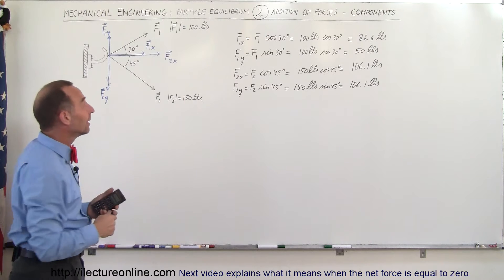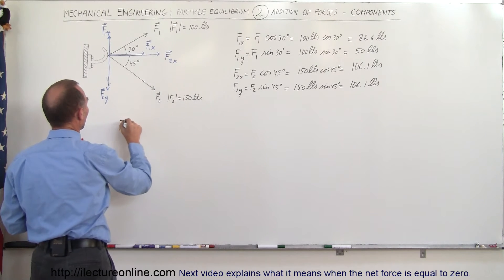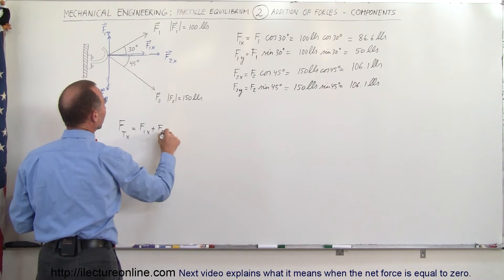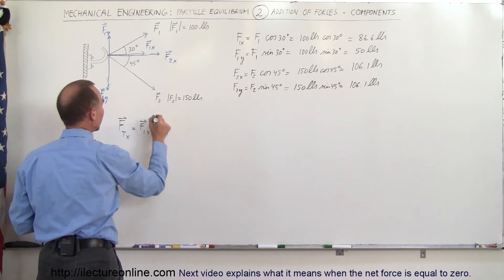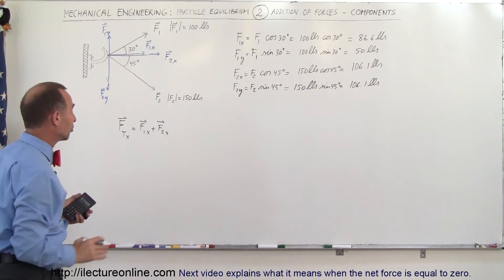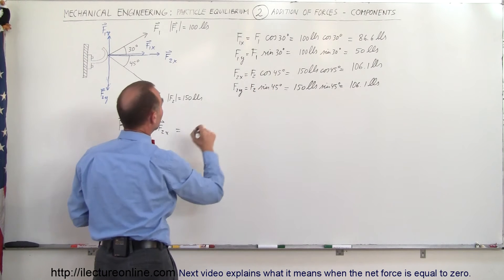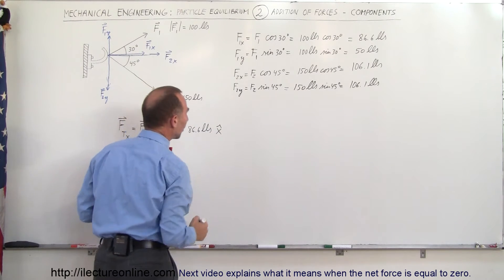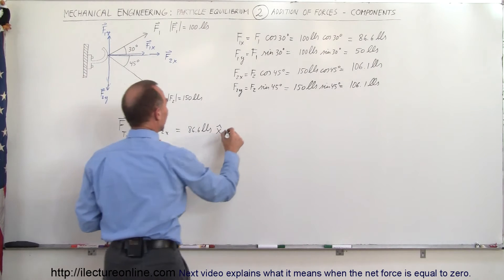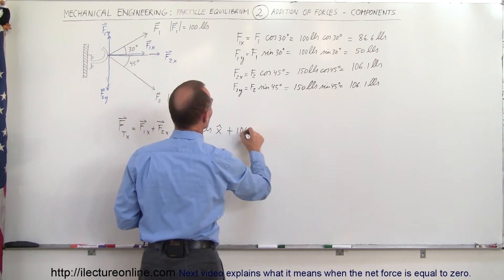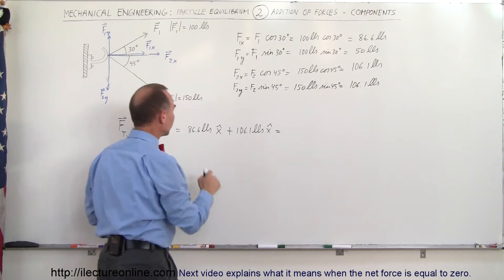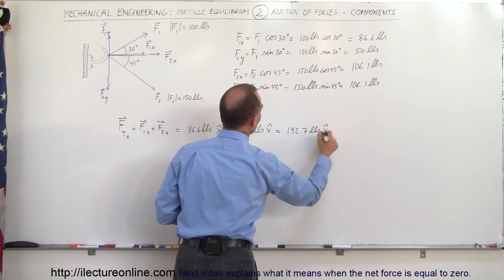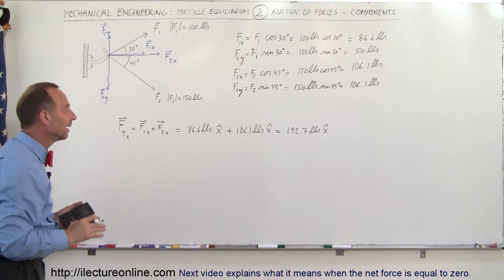Now we want to find the resultant in the X direction. F total in the X direction is equal to F1 in the X direction plus F2 in the X direction — and now we do have to worry about direction. So this is equal to 86.6 pounds in the X direction, plus 106.1 pounds in the X direction. When we add those two together we get 192.7 pounds in the X direction. This is how we make sure we keep the right sign in the correct direction.